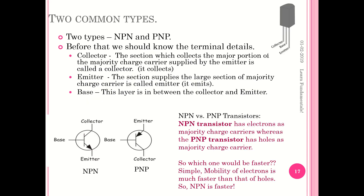There are two types of transistors: the first one is NPN, the second one is PNP. Before going deeper we need to understand the three terminals of the transistor — collector, base, and emitter. The emitter is the section that supplies the large section of majority charge carriers — the charge carrier is emitted here. There should be a collector to collect what the emitter supplies. The in-between layer is called the base.